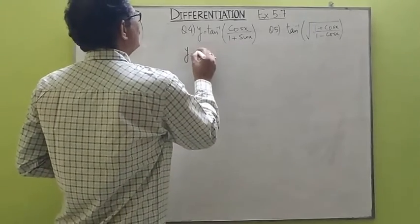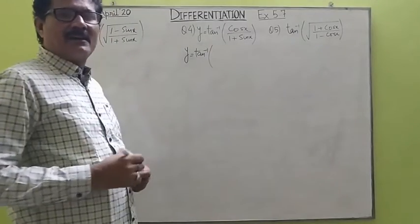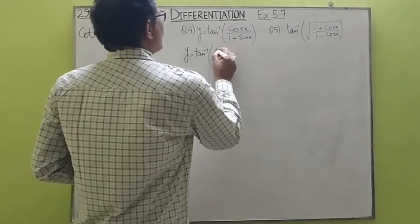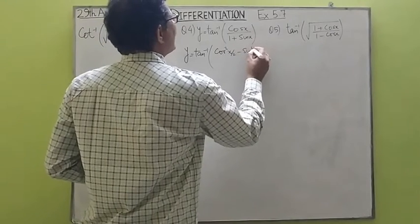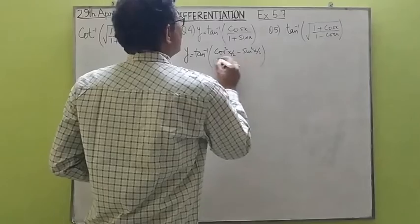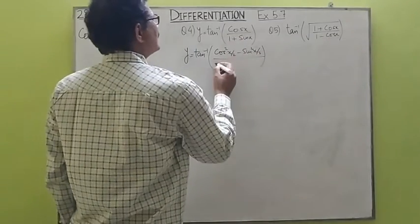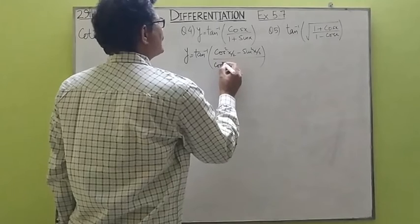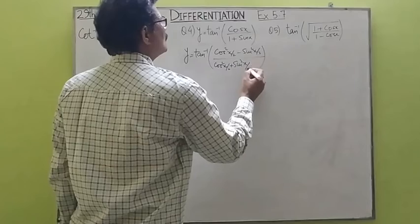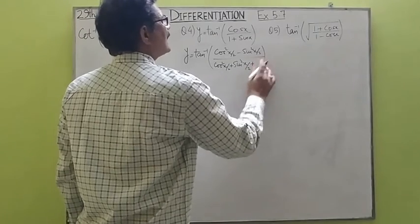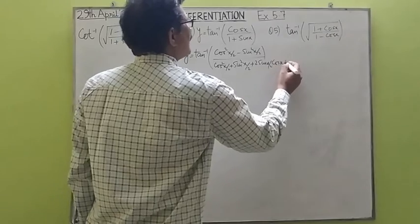y equals tan inverse of cos x, where cos x can be written as cos squared x/2 minus sin squared x/2. Similarly, 1 plus sin x can be written as cos squared x/2 plus sin squared x/2 plus 2 sin(x/2) cos(x/2).